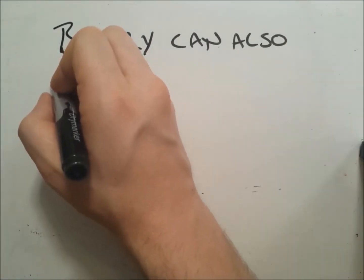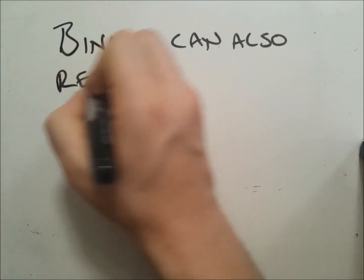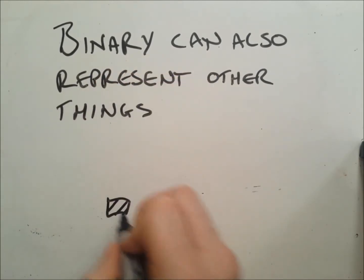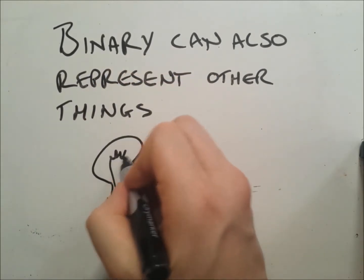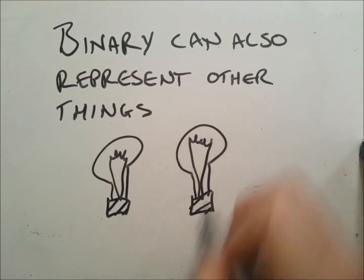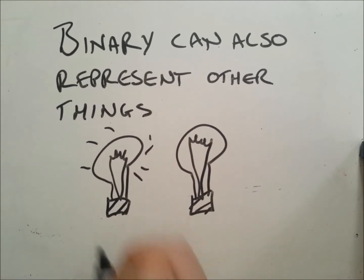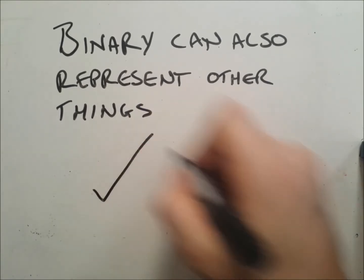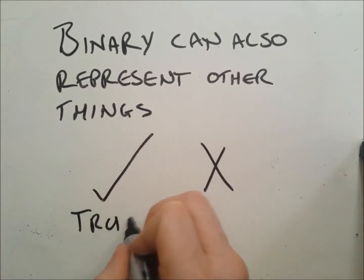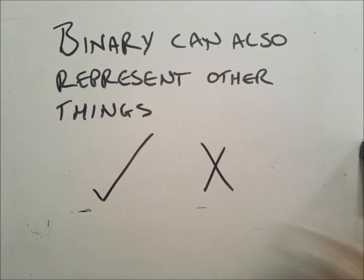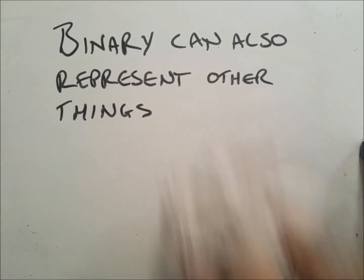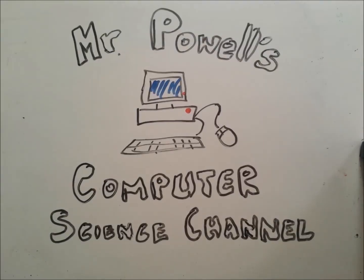Binary can also represent other things. For example, it can represent on and off, true and false, or yes and no. Thanks for watching everybody — see you next time.